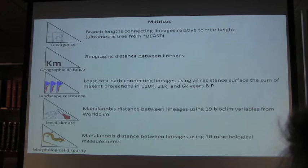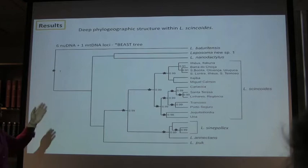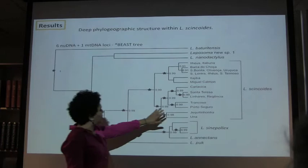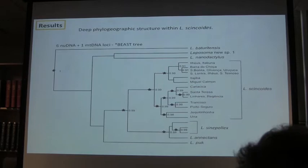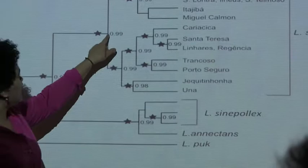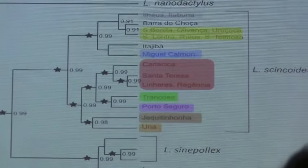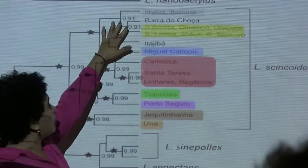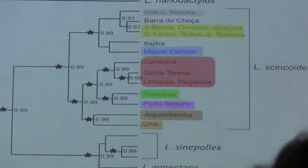Jumping to the results: this is the Leposoma species tree. I actually have all the species of Leposoma in the Atlantic forest represented here, plus a phylogeography of Leposoma cinchoidus, so the tips are named by locality or population. The nodes are really well supported and you see deep phylogeographic structure within Leposoma cinchoidus. Some of this divide between the two groups is even deeper than the divide between two other Leposoma species. Each locality is generally one lineage, except where geographically close localities are collapsed into one lineage.